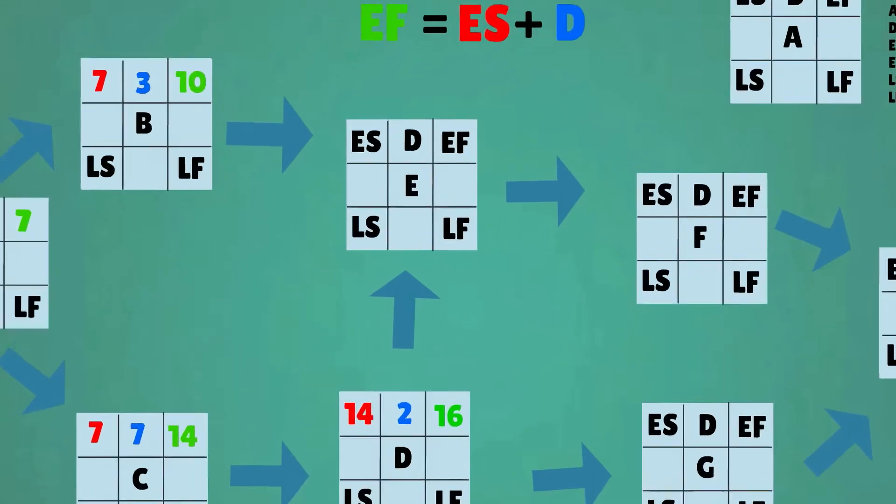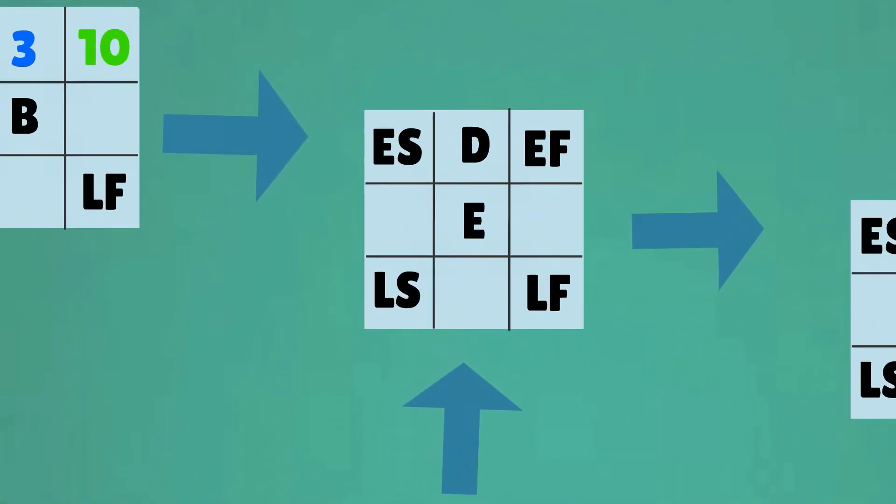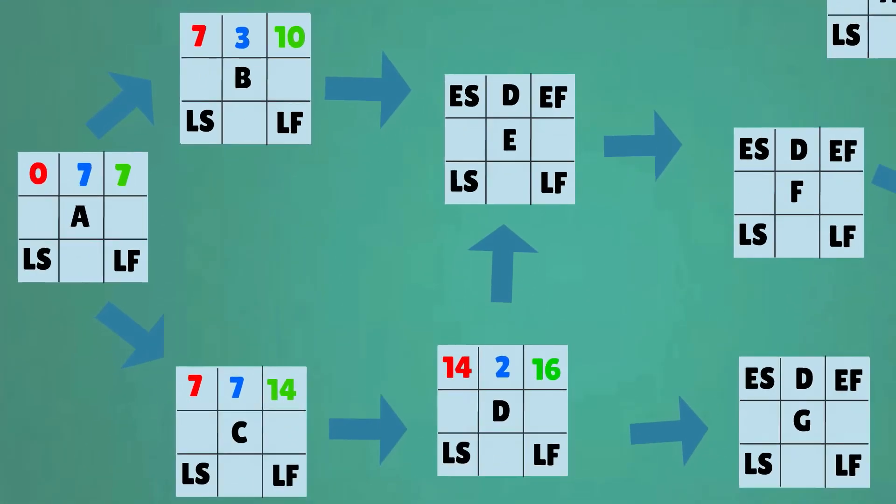When we look at activity E, this could not be done before both activity B and activity D have been finished. As activity E can only proceed when both activity B and activity D are finished, the early start time of activity E is the latest finish time of the two, in this case week 16.